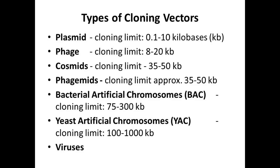Cosmids are hybrids of plasmids as well as phage DNA. Similarly, phagemids are also hybrids which contain phage DNA and plasmid DNA — they are all artificially synthesized. Bacterial artificial chromosomes can be used as vectors in bacterial host cells as well as yeast cells, allowing transfer of foreign genes into both cell types.